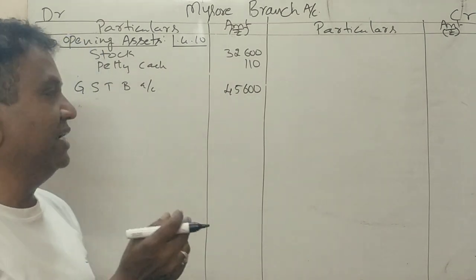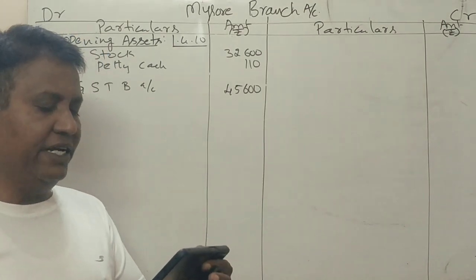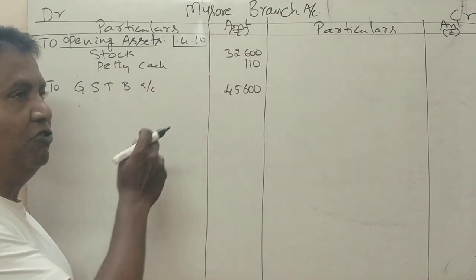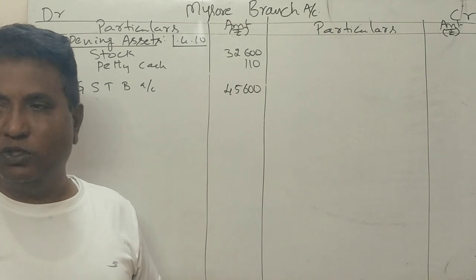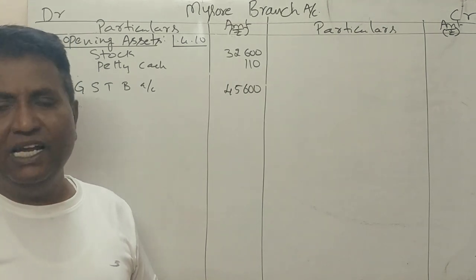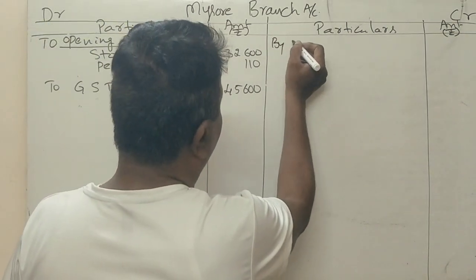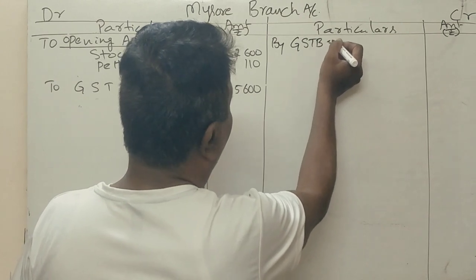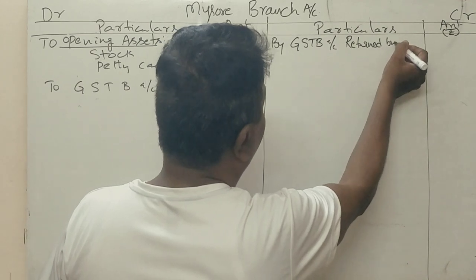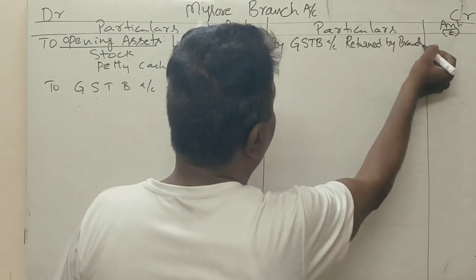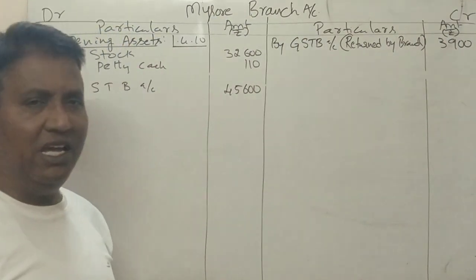Any goods sent from head office to branch go to the debit side. Goods returned by the branch — 3,900 rupees — are recorded on the credit side, as these are goods returned from branch back to head office. So goods returned by branch: 3,900 rupees credited to the branch account.